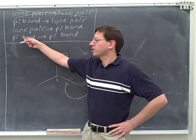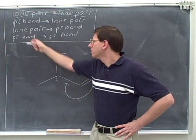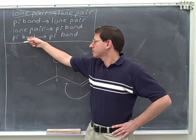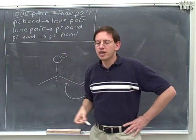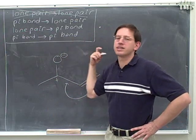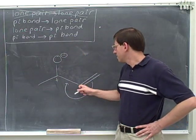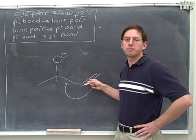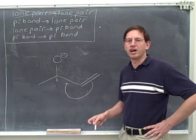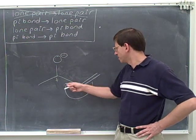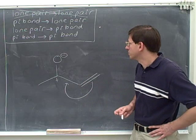One of the atoms that was sharing the old pi bond should still be sharing the new pi bond — that way you're sure that the new pi bond is as close as possible to the old pi bond. For example, in this case, this carbon was sharing the old pi bond, and this carbon will also be sharing the new pi bond. So we know that this new pi bond is going to be as close as possible to the old pi bond, so this would satisfy that rule.